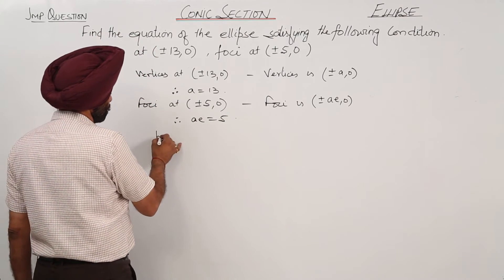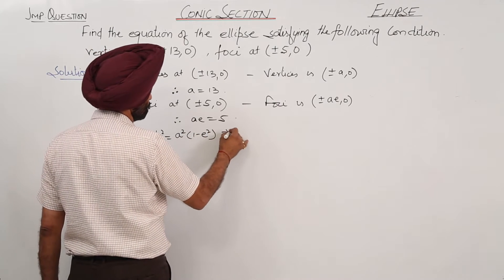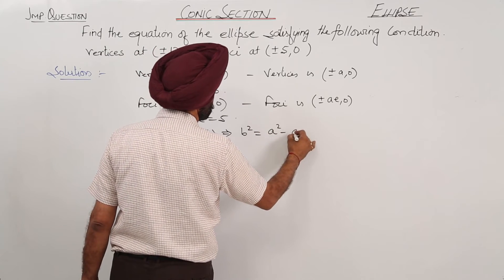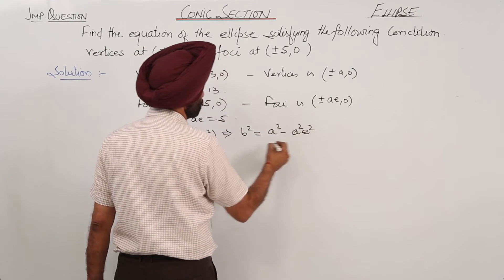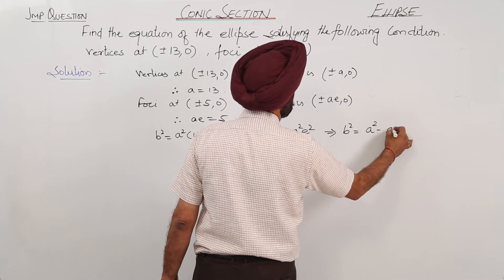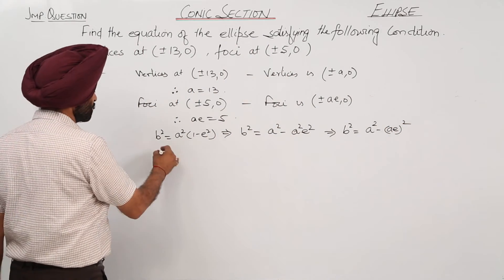Now, we have b square is equal to a square 1 minus e square. This becomes b square is equal to a square minus a square e square. b square is equal to a square minus a e whole square. So, now let us put the values.